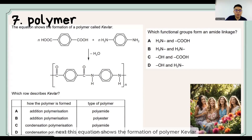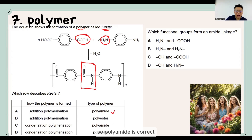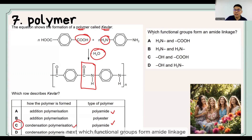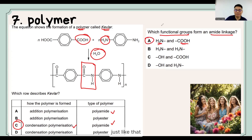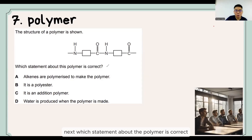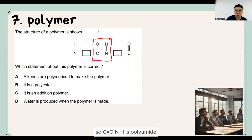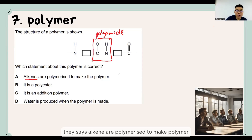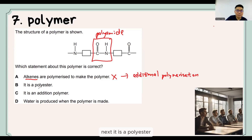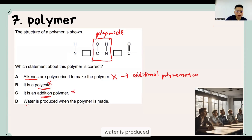Next question: this equation shows the formation of polymer Kevlar from acid plus amine — they form a polyamide, and since H2O is removed, it is condensation polymerization. The functional groups that form the amide linkage are COOH and NH2. Another question asks which statement about polymers is correct. Alkenes are used for addition polymerization, not condensation. The polymer shown with C=O and NH is a polyamide, made by condensation polymerization, and water is produced as a byproduct.